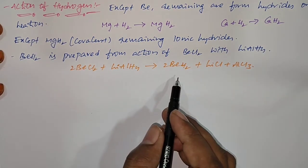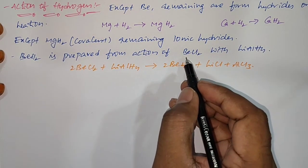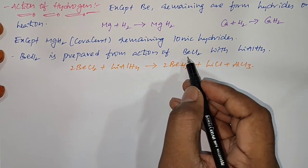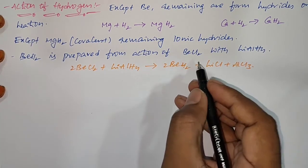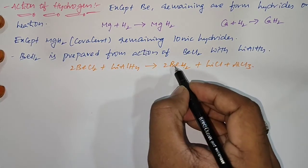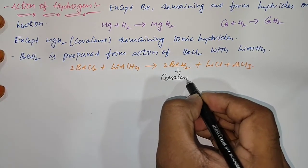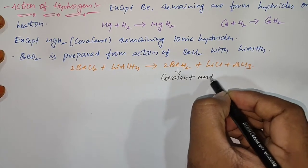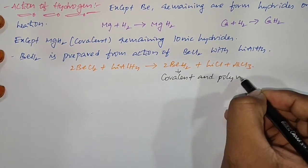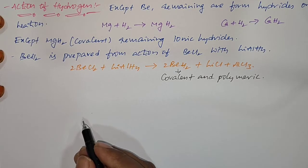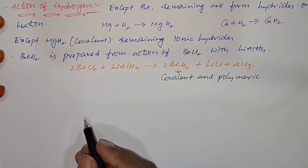Beryllium hydride is also covalent in nature and polymeric, but the remaining hydrides of 2A group elements are ionic and monomeric.